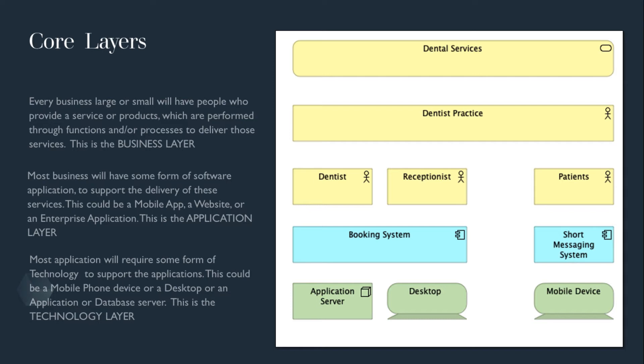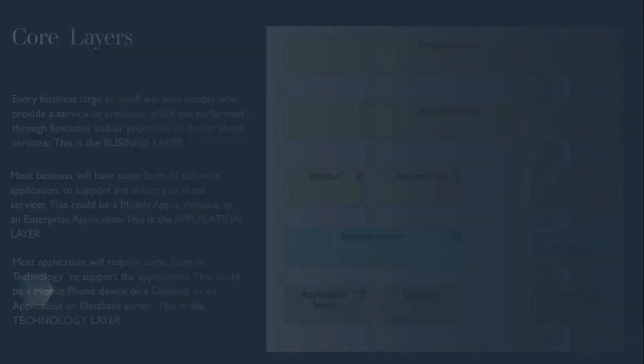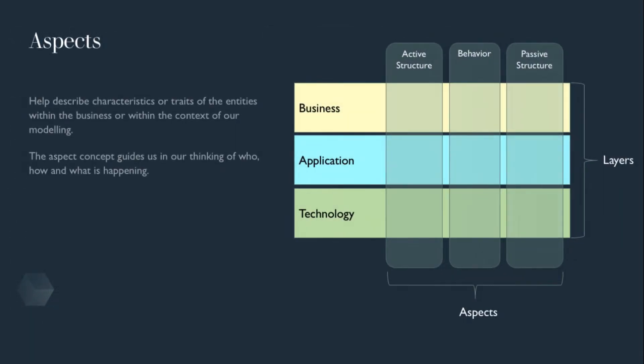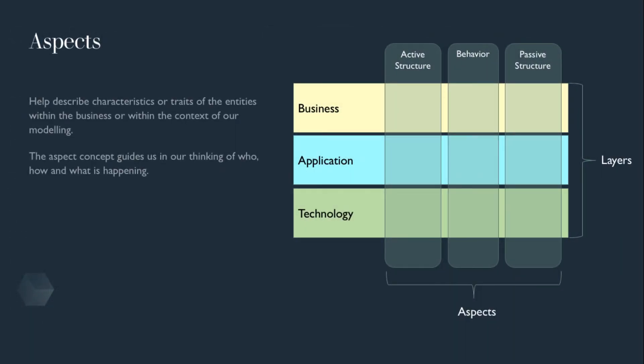Now that we've outlined, conceptualized if you like, the key entities across the layers, we need context about how they interrelate. The second part of our framework is aspects. Aspects help describe characteristics or traits of the entities within the business or within the context of our modelling. The aspect concept guides our thinking on who, how and what is happening.